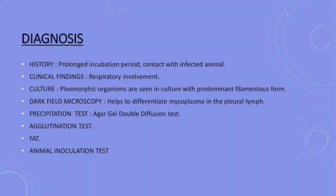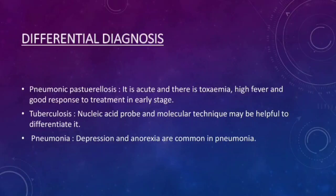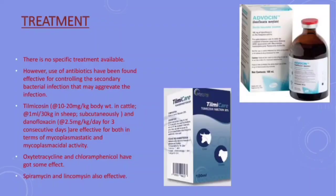Differential diagnosis: This disease can be differentiated from pneumonic pasteurellosis, tuberculosis, and pneumonia. Now comes the treatment. There is no specific treatment available for contagious bovine pleural pneumonia. However, use of antibiotics has been found effective for controlling secondary bacterial infection. Oxytetracycline and chloramphenicol are some commonly available antibiotics that have shown some effect.